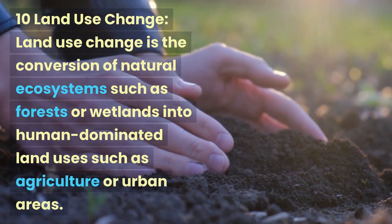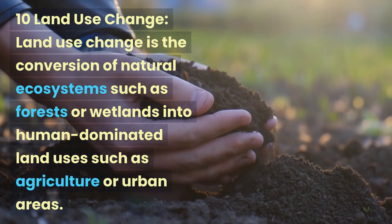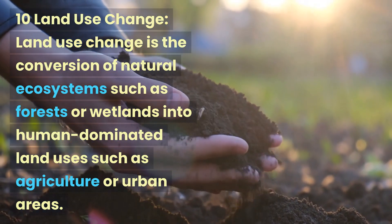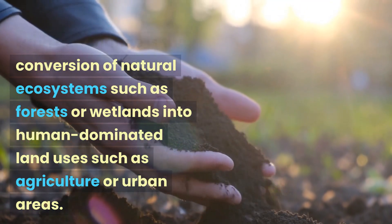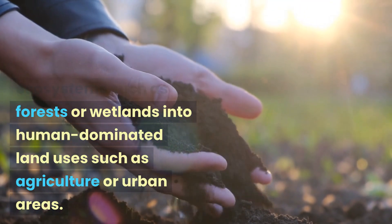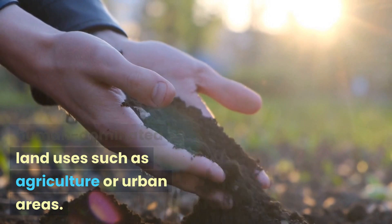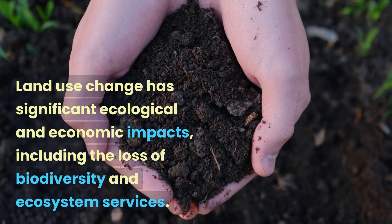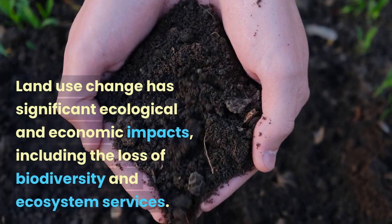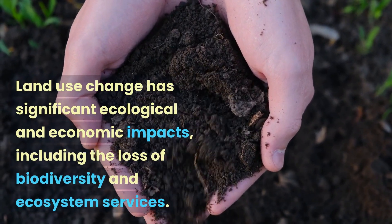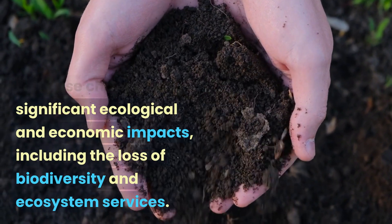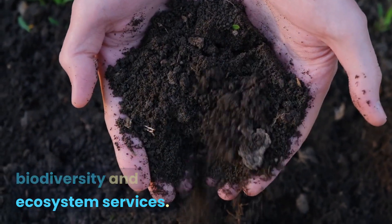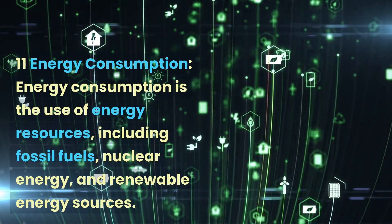10. Land use change is the conversion of natural ecosystems such as forests or wetlands into human-dominated land uses such as agriculture or urban areas. Land use change has significant ecological and economic impacts, including the loss of biodiversity and ecosystem services.